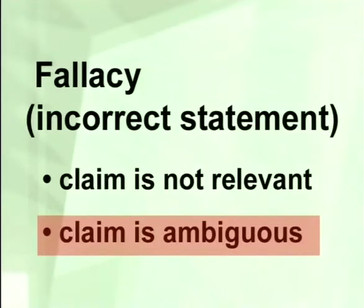Then there's the second type: ambiguity. The word means that you can derive more than one meaning from what is said. The fallacy of ambiguity is when you've made a claim and you're providing some kind of support for that claim which can be taken in many ways — in fact, the meaning is not clear at all.